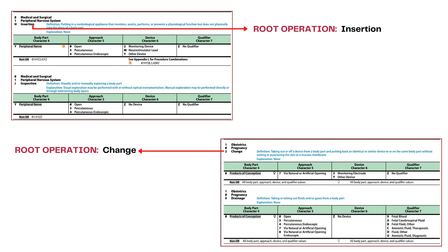This is how the root operation is identified in the ICD-10 PCS tables. For the first table, the root operation is insertion in the medical and surgical section. For the second table, it is root operation change from the obstetric section.